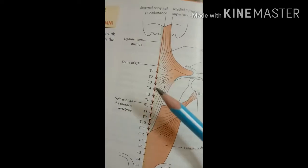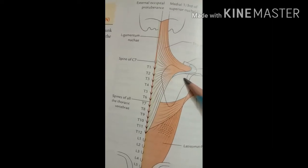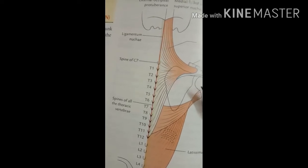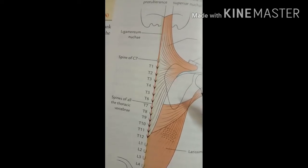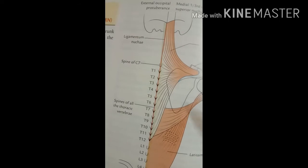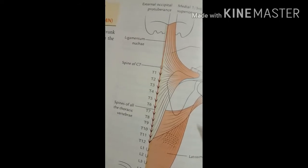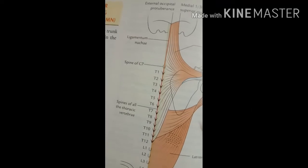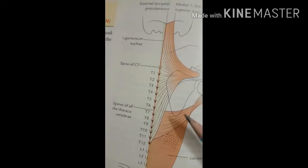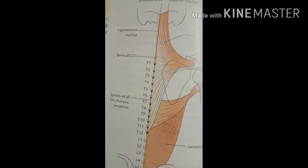The nerve supply to the trapezius muscle is from the spinal part of the accessory nerve and also from the C3 to C4 spinal nerves. The action of this muscle: the upper fibers act to elevate the scapula, the middle fibers retract the scapula, and the lower fibers rotate the scapula during the rotatory movement of the shoulder.